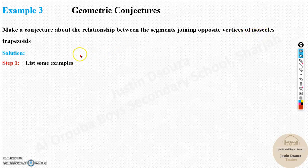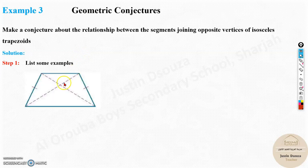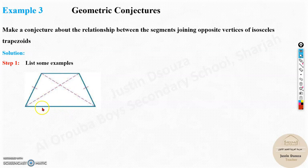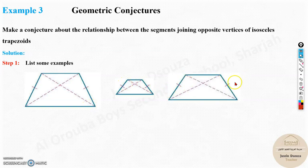Let's list some examples for isosceles trapezoids. We know isosceles trapezoids have these two lines over here equal, the legs. The legs are these two from the base. The legs are always equal for isosceles trapezoids.